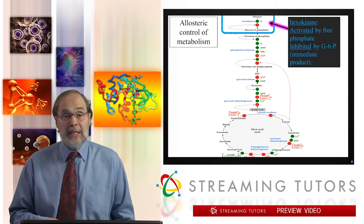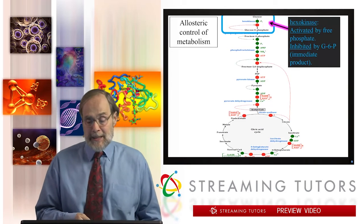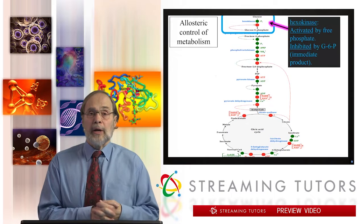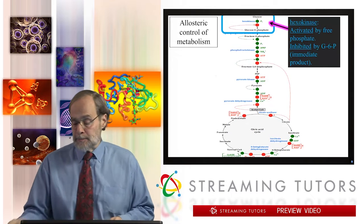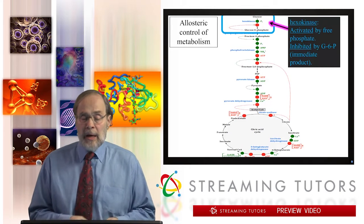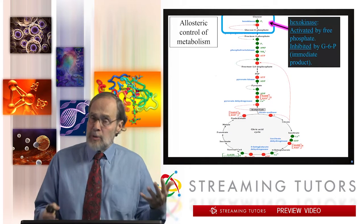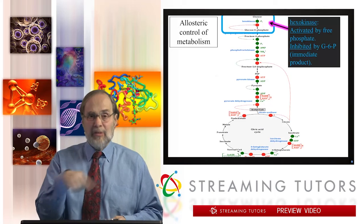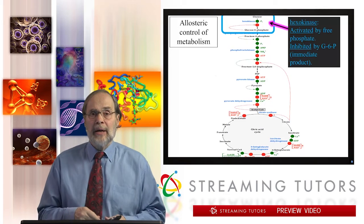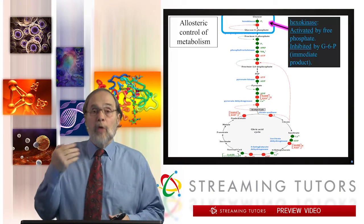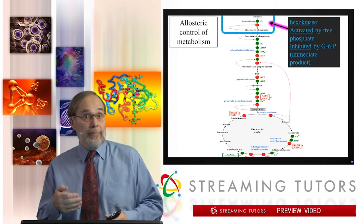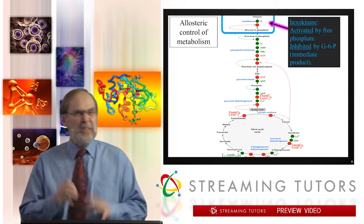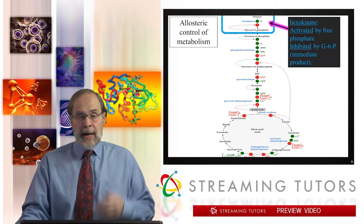Hexokinase is also inhibited by its own product, G6P. This is called negative product feedback — if you're overproducing the product, you stop making any more. That makes elementary sense.